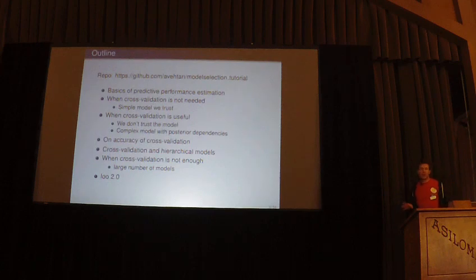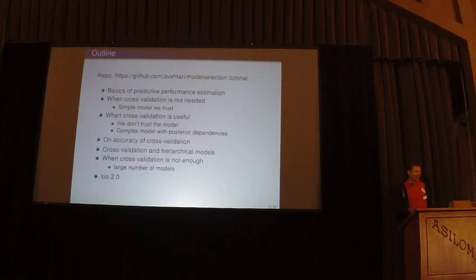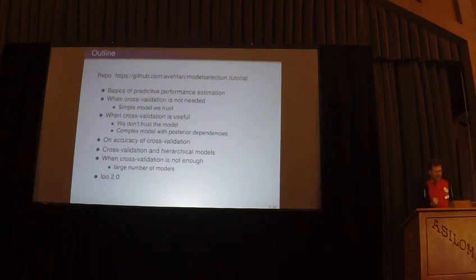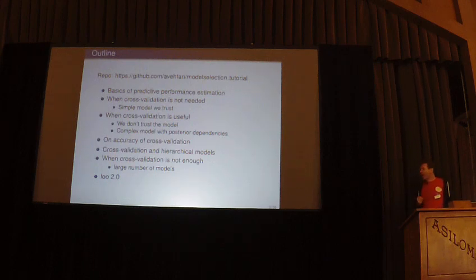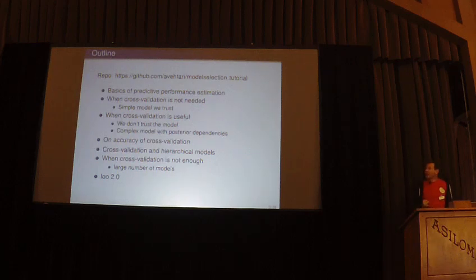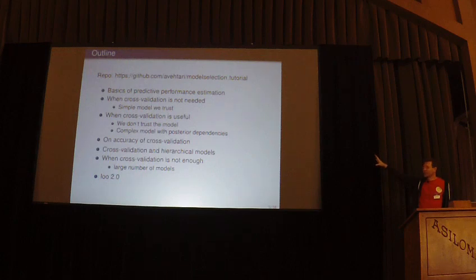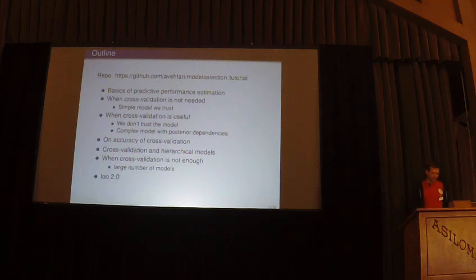Today I have only a little time for the basics of predictive performance estimation, but you have at least a good background with the basics of Stan and making predictive models. I talk a lot about cross-validation and often recommend it, but I start by showing an example where we don't need cross-validation, and I can also show that cross-validation is actually a weaker choice than just looking at the model posterior.